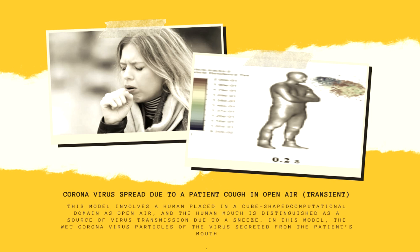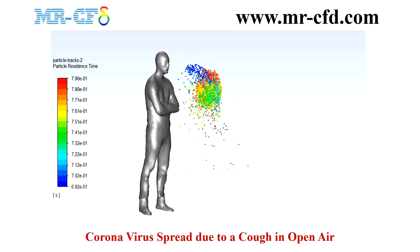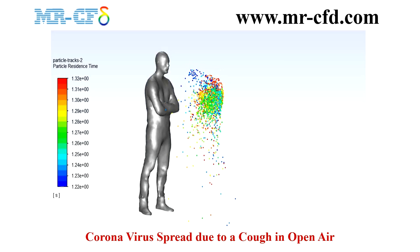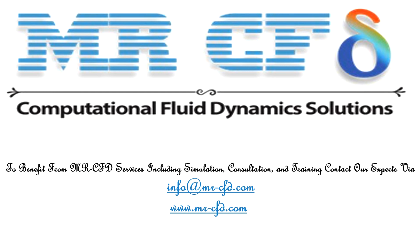In the fourth project, the spread of coronavirus due to a cough in the open air is simulated. The spread of virus particles in the open air can infect a person at a certain distance from the patient. One of the most up-to-date topics researchers are examining is calculating the minimum appropriate distance between a sick person and a healthy person to prevent virus transmission when a patient coughs or sneezes — known as social distancing or physical distancing. Using ANSYS Fluent, it is possible to simulate the release of coronavirus particles from the patient's mouth during coughing.